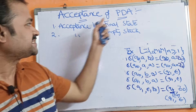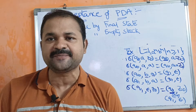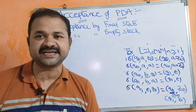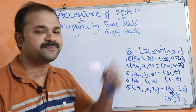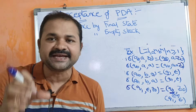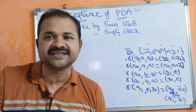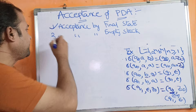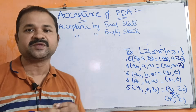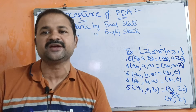Now let us discuss about acceptance of PDA. A language is accepted by PDA in two ways. The first one is acceptance by final state. The second approach is acceptance by empty stack. After processing the entire input string, if we get a final state, then we can say that the corresponding language is accepted by PDA. Likewise, after processing the entire input string, if the stack is empty, then we can say that the corresponding language is accepted by pushdown automata.